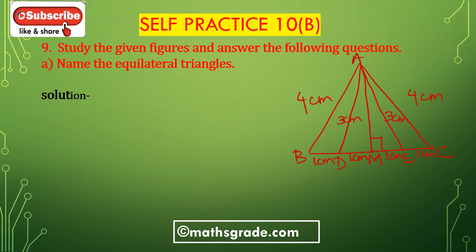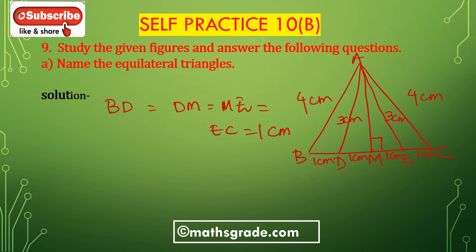In triangle ABC, BD is 1cm. To name the equilateral triangle: BD equals DM equals ME equals EC equals 1cm. So BC will be 4cm. So AB equals BC equals AC equals 4cm.